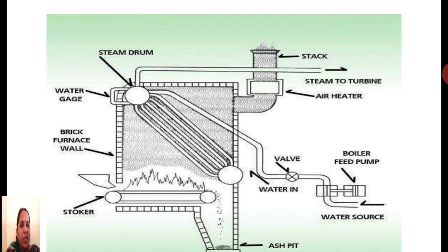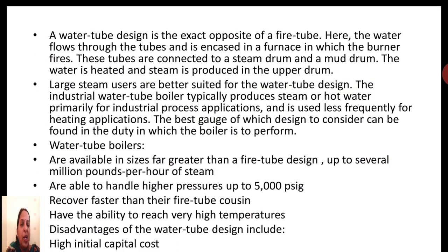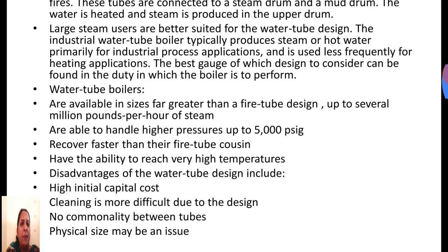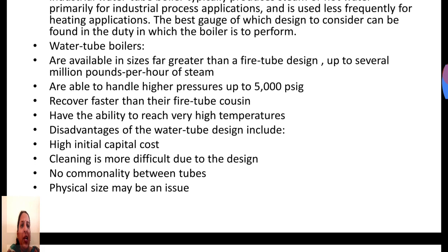This picture clearly depicts how the arrangement is made in water tube boilers — water is taken inside the tubes while the surrounding area is filled with gases to heat the water. Water tube boilers are available in sizes greater than fire tube boilers and can handle high pressures up to 5,000 psi. Disadvantages include very high capital cost, more difficult cleaning due to the design, no commonality between tubes, and physical size may be an issue due to the large number of tubes.